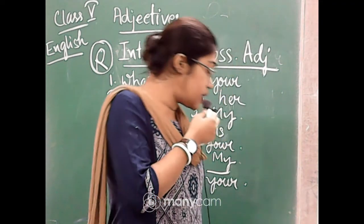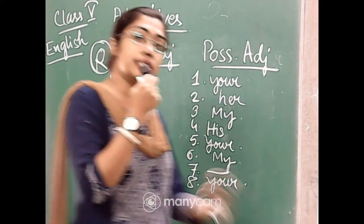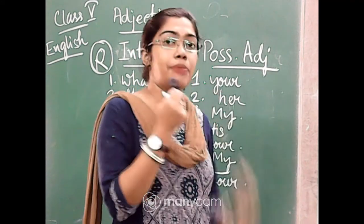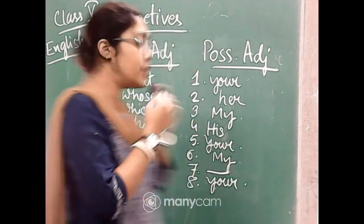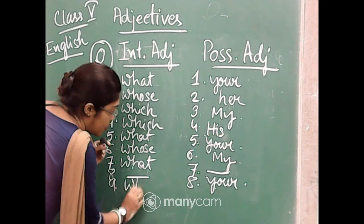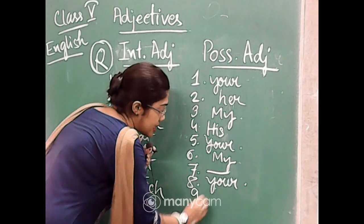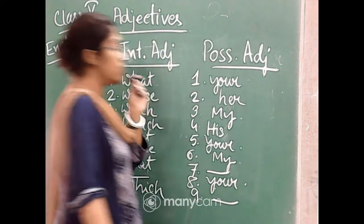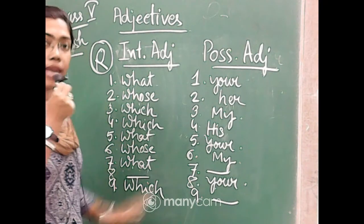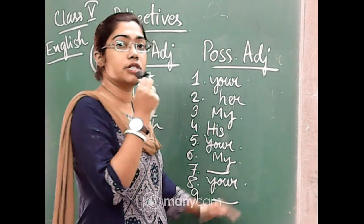In number nine: 'Which bed is yours?' — the meaning is the same but changed a little. Here 'which' is the interrogative adjective, whereas there is no possessive adjective. So for positive, we will give a dash. 'Which' is interrogative for number nine, but for possessive there is nothing.